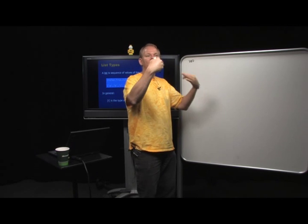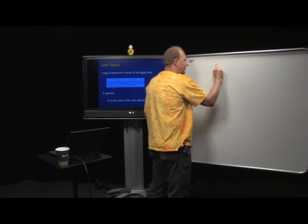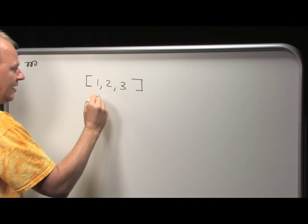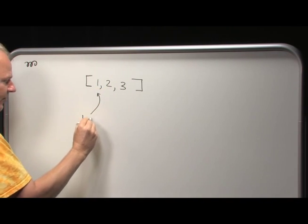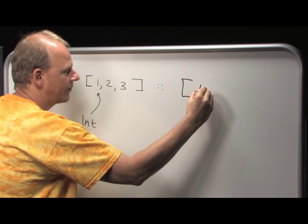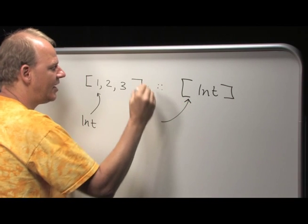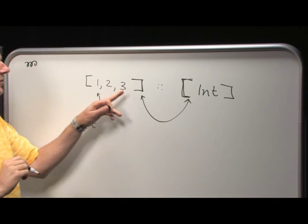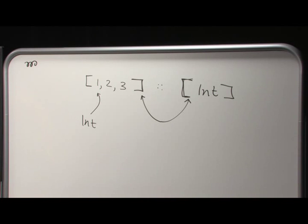One thing Haskell does nicely is that the structure of expressions and the structure of types correspond. When we write a list like `[1, 2, 3]`, each element is a number of type Int, and the type of this expression is `[Int]`. We use the same square bracket notation for both the type constructor and the value constructor.